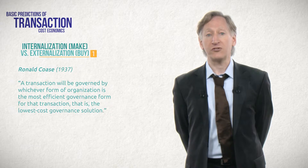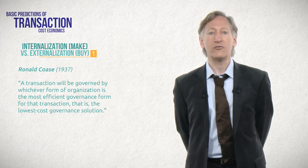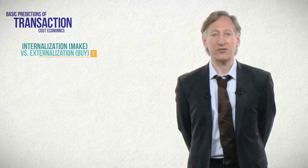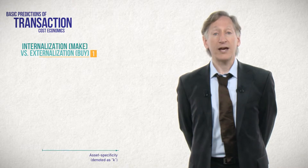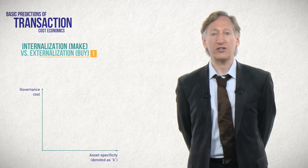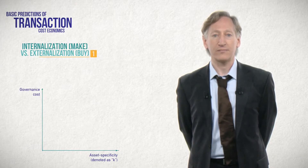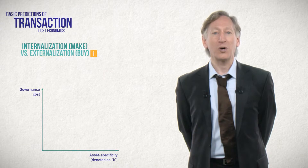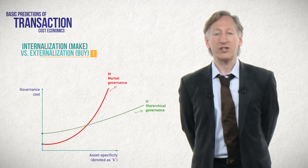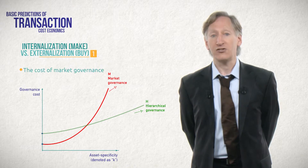The theory's basic predictions are most easily understood in terms of the theory's canonical transaction: vertical exchange in a supply chain. We will use a simple graph to help outline the predictions. In this graph, the x-axis represents asset specificity and the y-axis represents governance cost — the cost of governing a transaction. We will draw two curves: one representing market governance, we will call that M, and one representing hierarchical governance, H.